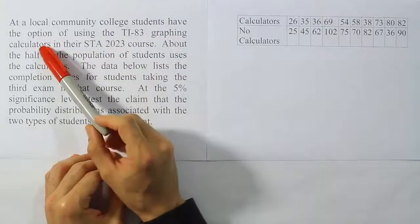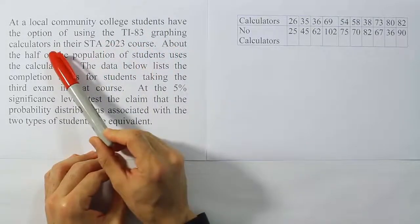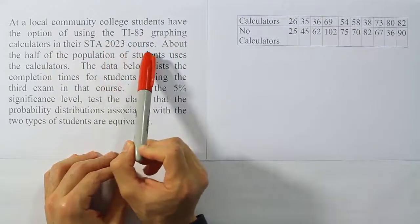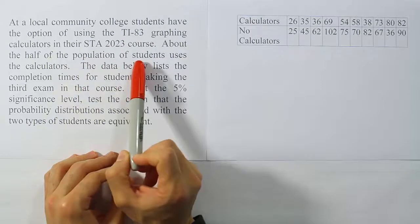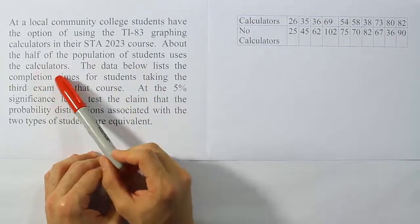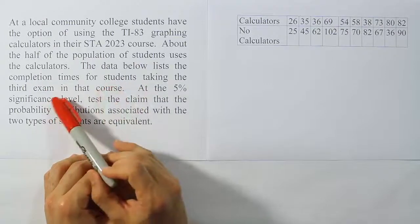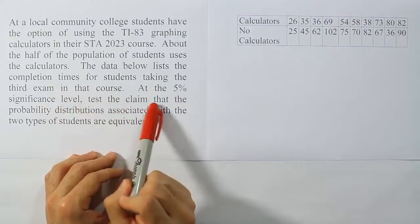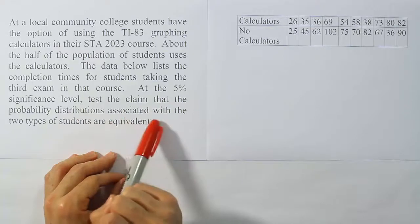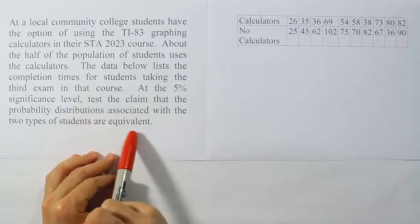At a local community college, students have the option of using the TI-83 graphing calculators in their STA 2023 course. About half of the population of students use the calculators. The data below lists the completion times for students taking the third exam in that course. At the 5% significance level, test the claim that the probability distributions associated with the two types of students are equivalent.